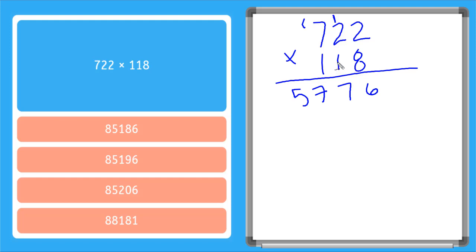Now I need to multiply my tens column on the bottom, but the first thing I do is add a zero in that ones place here. One times two is two, one times two is two, one times seven is seven.